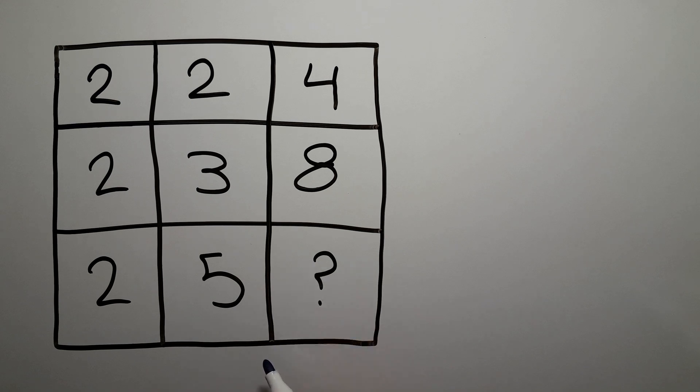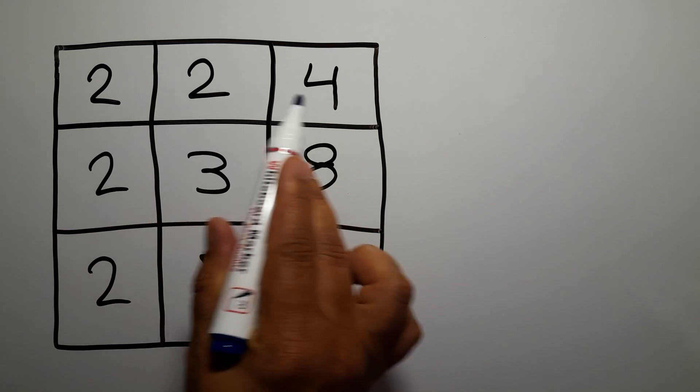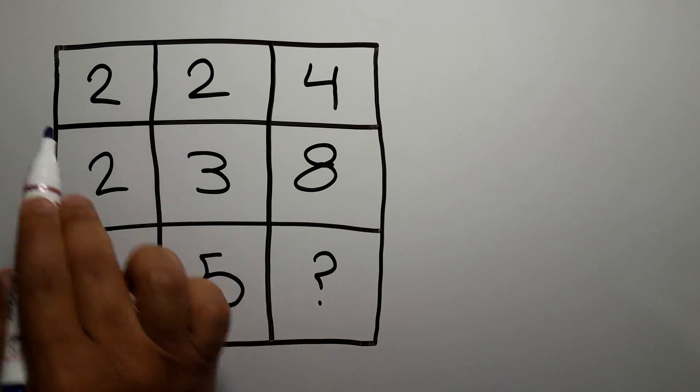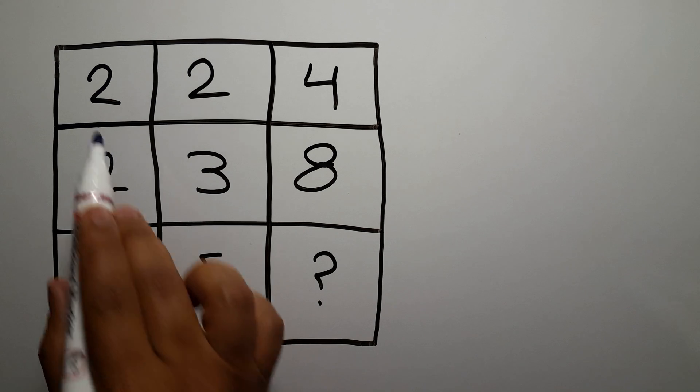Are you ready to solve? Let's go down to the pattern. In each row we have three numbers and we need to find the relationship between these three numbers. In the first row we have 2, 2, and 4.